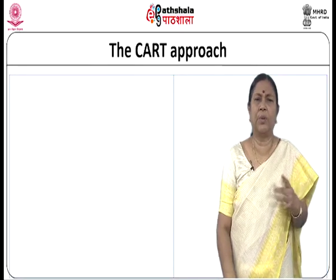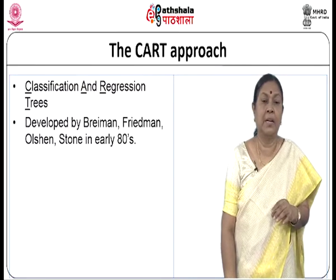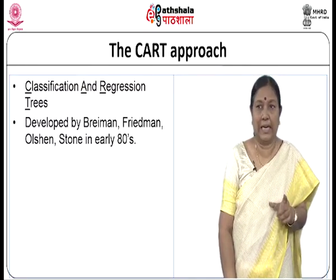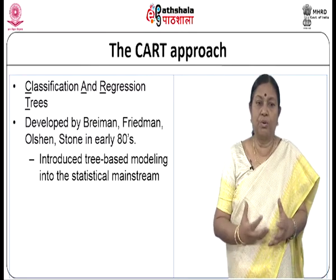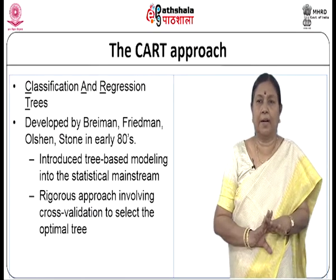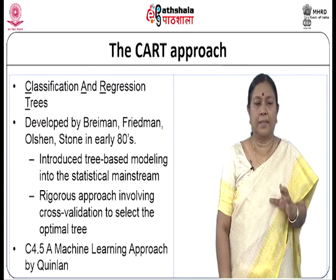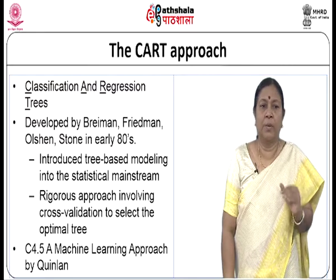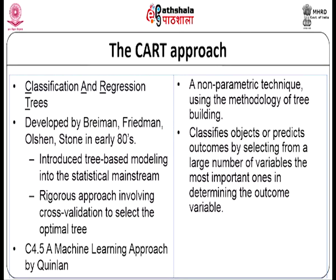The CART approach stands for classification and regression tree. It was developed by Breiman, Friedman, and Olshen in the early 80s after decision trees became popular, introducing tree-based modelling into the statistical mainstream. It uses statistics for tree-based modelling and is a rigorous approach involving cross-validation to select the optimal tree. C4.5 is a machine learning approach by Quinlan also used for decision trees. CART classifies objects or predicts outcomes by selecting from a large number of variables the most important ones that determine the outcome variable.